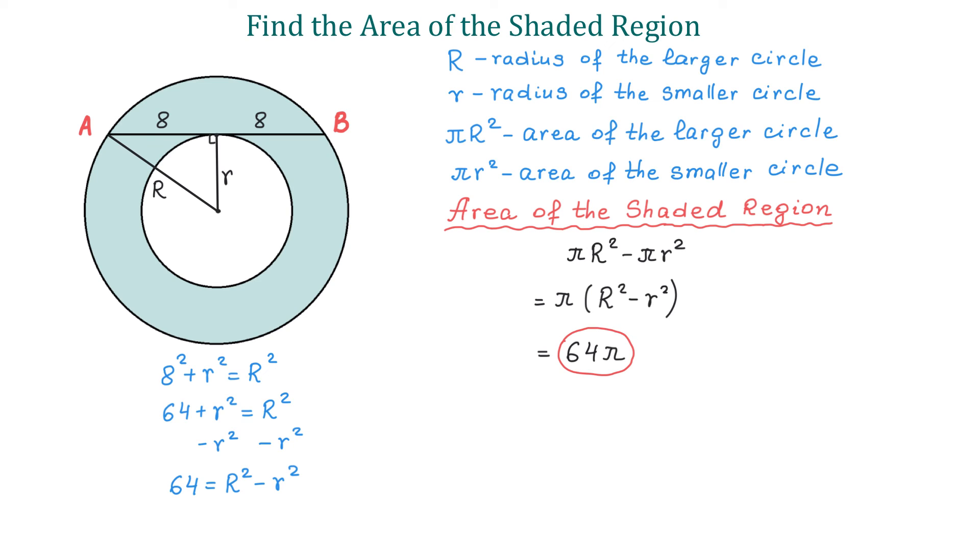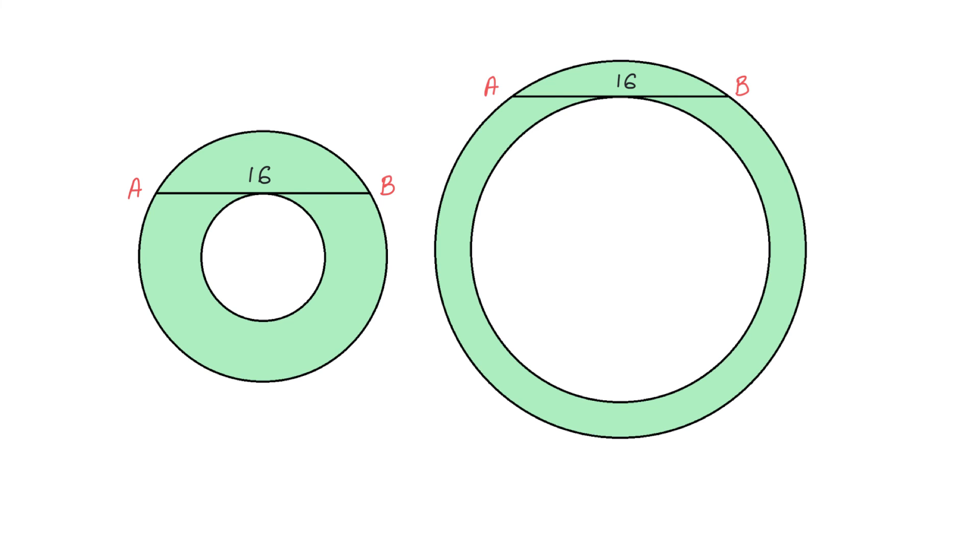As you see, to find this area, it is enough to know the length of this chord. Take a look at these two figures. Although the circles have different sizes, both figures have chords with the same length. This means these two shaded regions will have the same area. To find this area, take the chord, divide it by 2, raise it to the second power, and multiply by π.